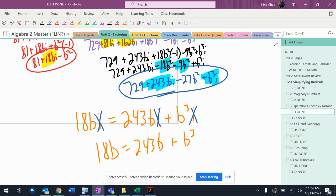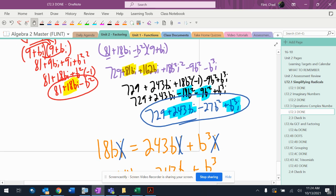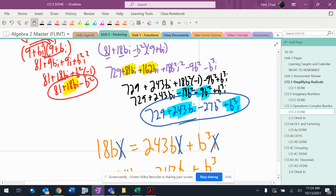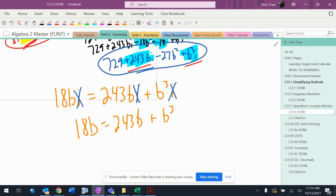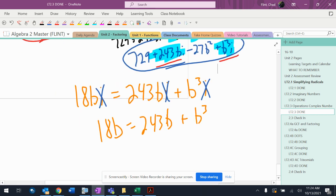So it says make the imaginary parts equal. So I highlighted the imaginary parts - the 18bi right here, 18bi, and then these two, those are the imaginary parts. I want those to be equal, so what I did is I set them equal to each other right here: 18bi = 243b plus b to the third.